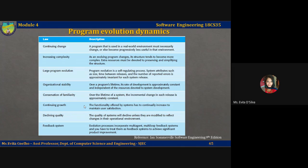Let's take a look at these laws. The first law, continuing change, states: a program that is used in a real-world environment must necessarily change or else become progressively less useful in that environment. This first law states that system maintenance is an inevitable process. As the system's environment changes, new requirements emerge and the system must be modified. When the modified system is reintroduced to the environment, this promotes more environmental changes, so the evolution process will start again.